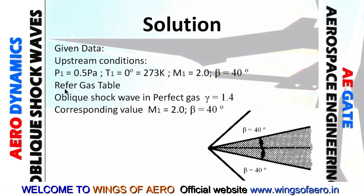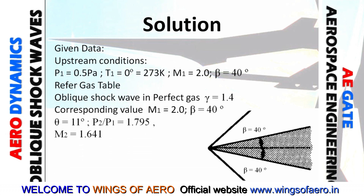For the solution, open the gas table for oblique shock waves with gamma equals 1.4. With Mach number 2 and beta approximately 40 degrees, the corresponding theta is approximately 11 degrees. The pressure ratio P2 by P1 is 1.795 and the downstream Mach number M2 is 1.641. So one answer is M2 equals 1.641.